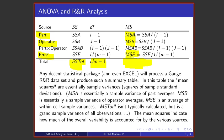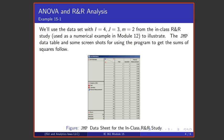The example that we're going to use is one that was used in module 12. It's the data set from the in-class R&R study that had four parts, three operators, and two measurements per part-operator combination.